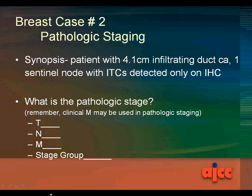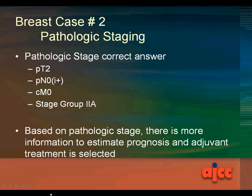What is the pathologic stage — the T, the N, the M, and the stage group? The correct answer is pT2, pN0(i+), cM0, and stage group 2A. Based on the pathologic stage, there is more information to estimate prognosis and adjuvant treatment is selected.